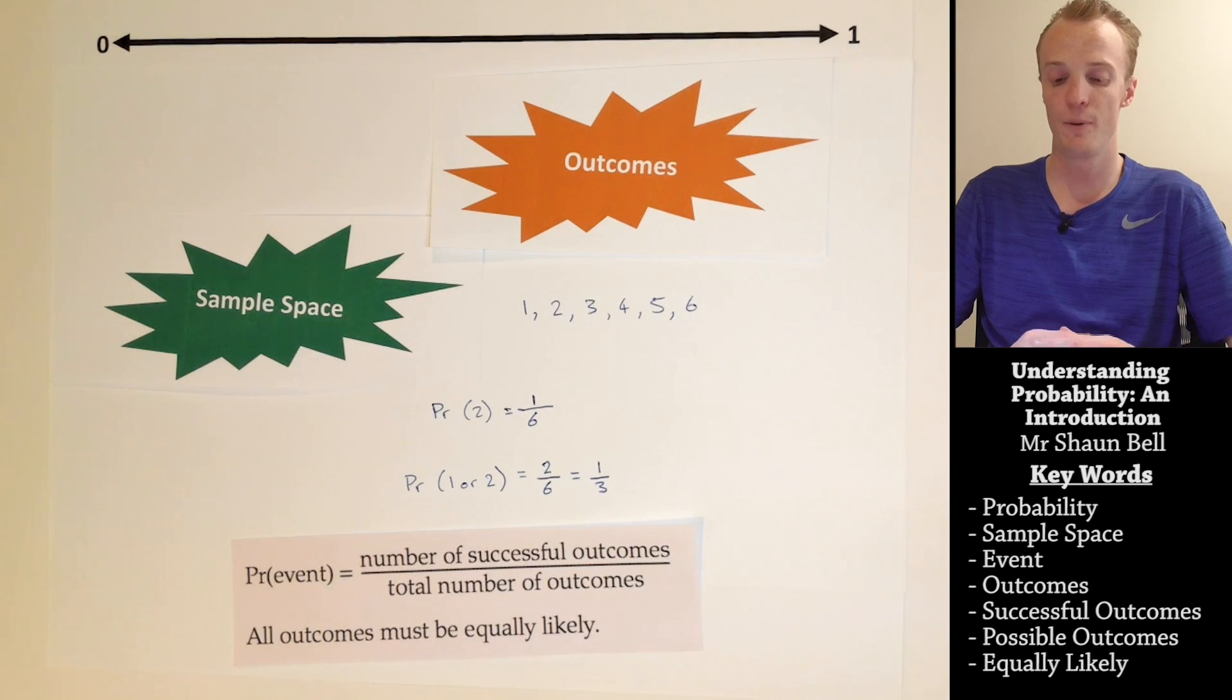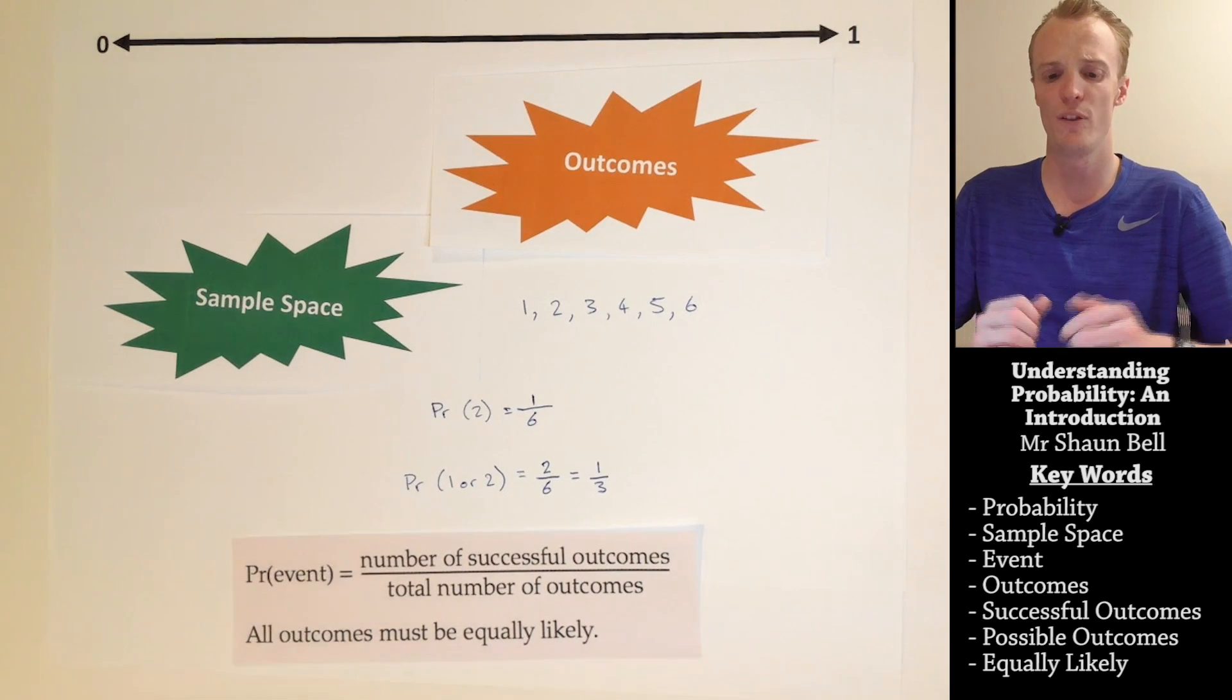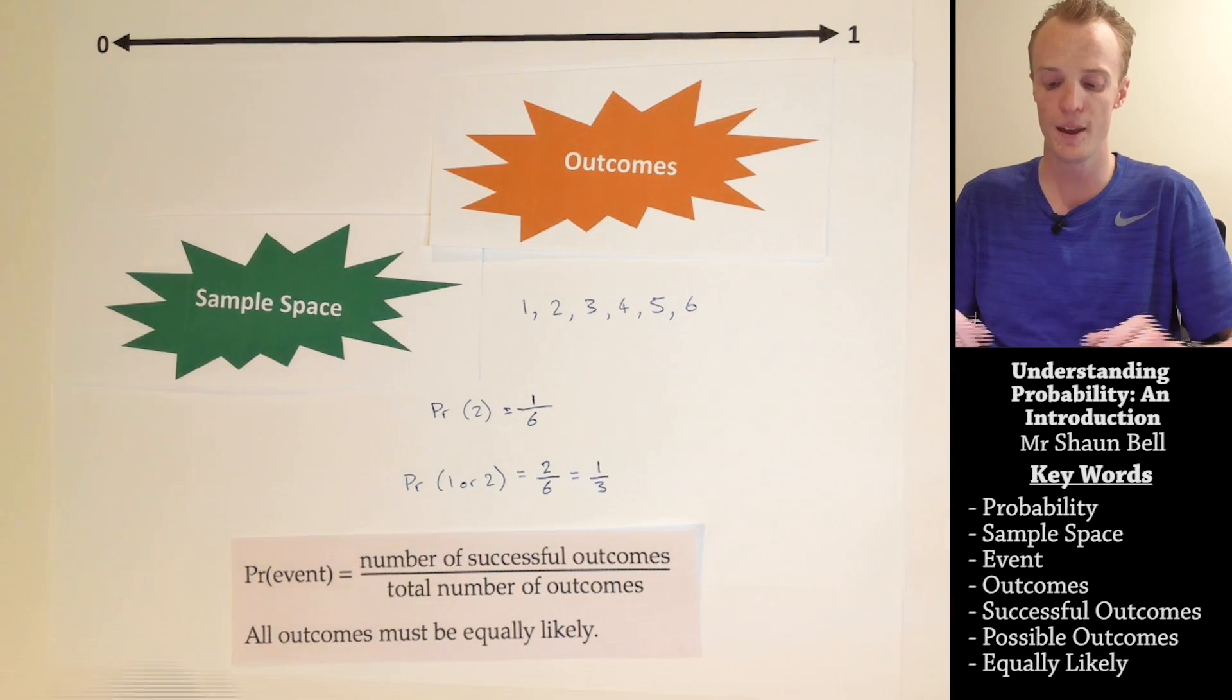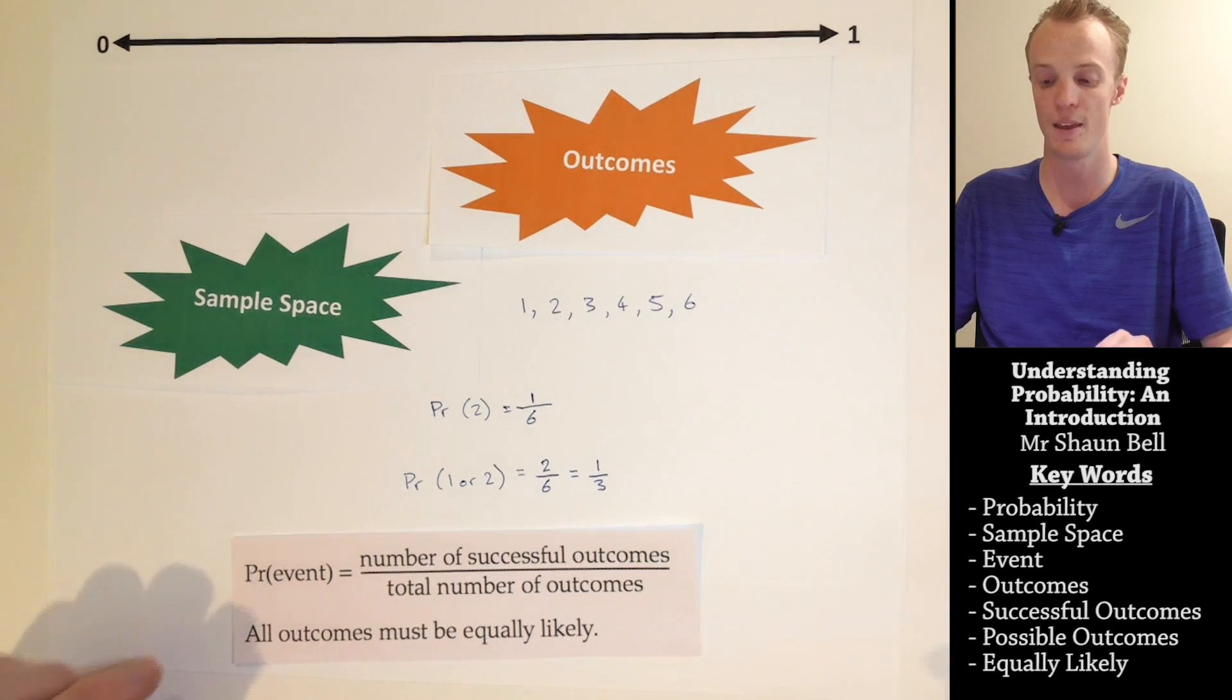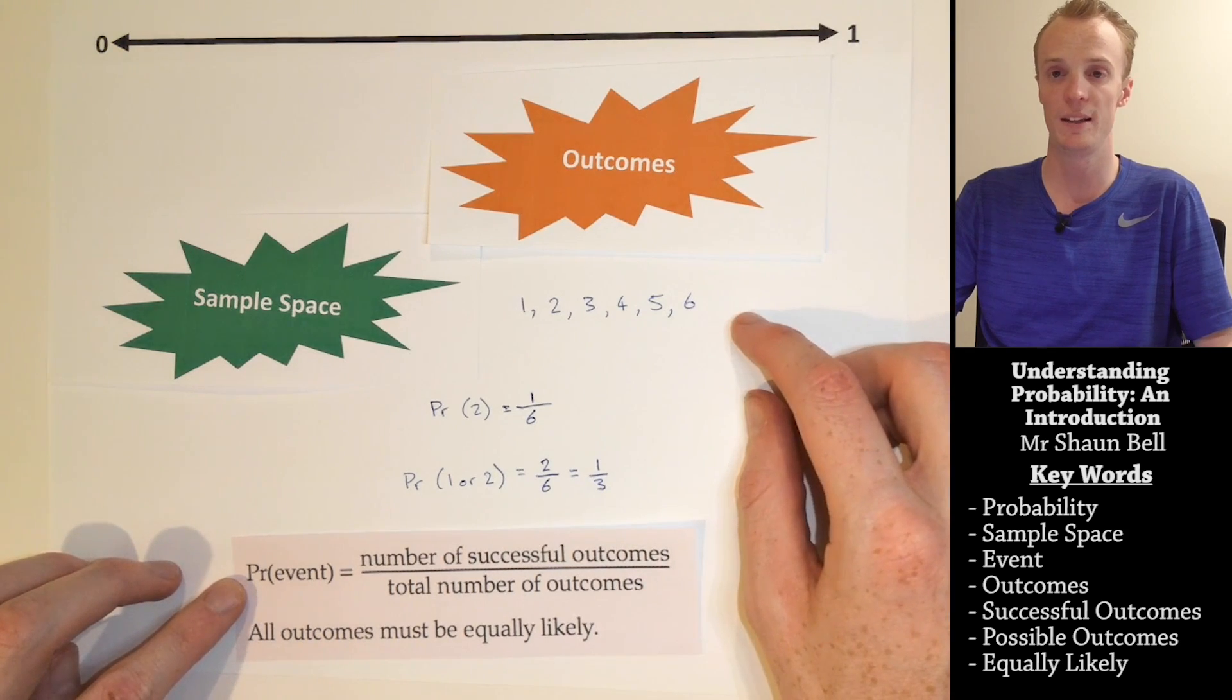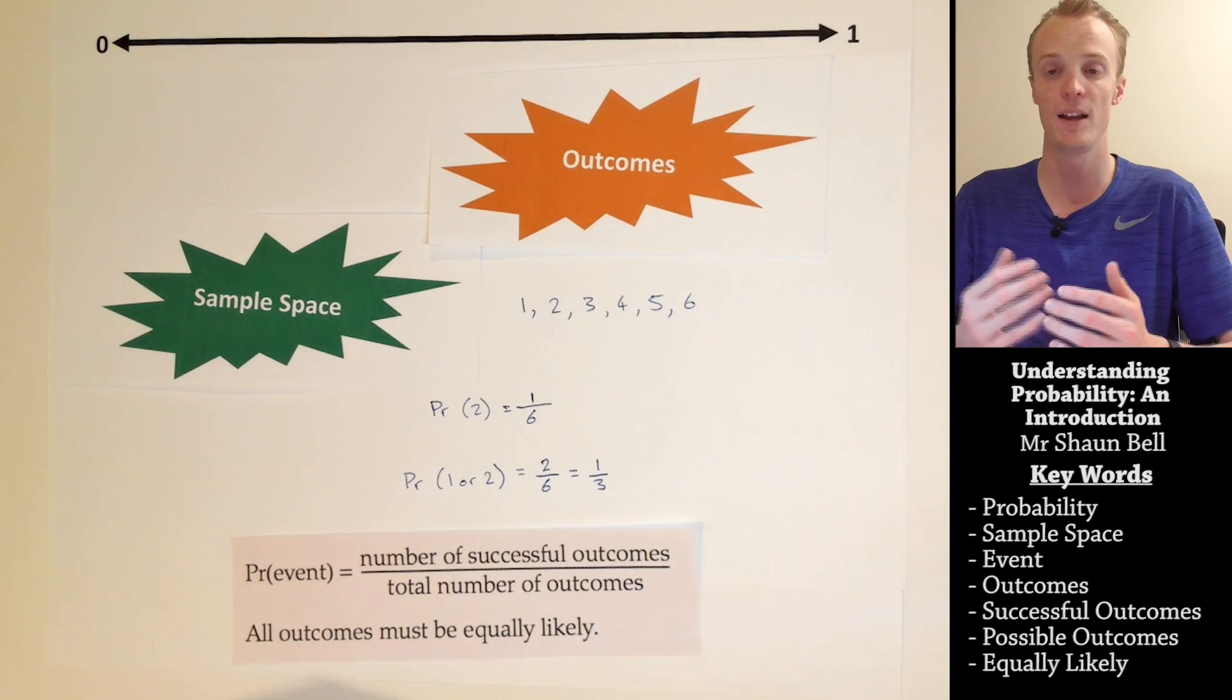So, to summarize, if we want to know what the probability of an event is from occurring, we first need to list out our sample space of all the possible outcomes that can occur. From there, we count up the number of successful outcomes there are in our sample space, and we divide it by the total number of outcomes that we listed in our sample space. Remember, for this simple probability, we're looking at situations where all outcomes are considered to be equal.